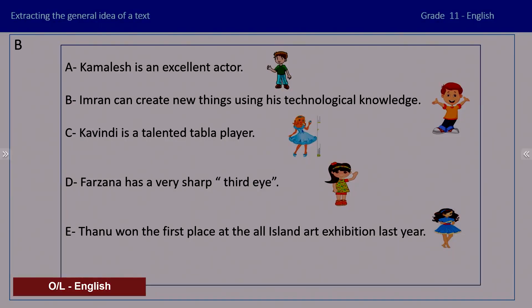Now you have A, B, C, D and E. Let's all join and read. Kamalesh is an excellent actor - he can act very well. Keep it in mind. Imran can create new things using his technological knowledge. Keep all this information about the students. Kavindi is a talented tabla player. There is a girl who can do aesthetic very well. And then Farsana has a very sharp third eye - you must be wondering what this third eye is, but if you cannot find the answer at first, when you do the other four questions you will easily get the remaining one.